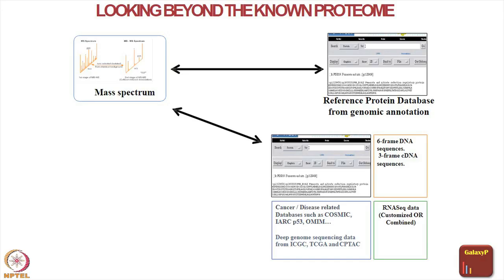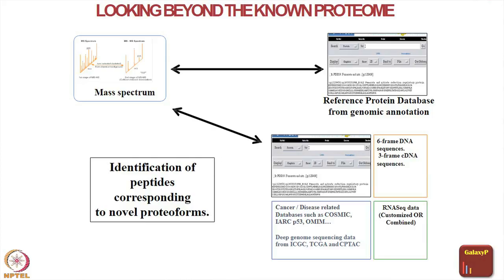If you have a mass spectrum — and generally if you have a reference protein database — you end up identifying proteins which are annotated or known. However, you can actually expand your number of identifications by searching against what was earlier used as a six-frame DNA sequence or even a three-frame cDNA sequence. Nowadays with the amount of RNA-seq data available, and the ability to generate both RNA-seq data and mass spectrometry data for the same sample, one can use RNA-seq data. Researchers have also used repositories like COSMIC which help you get data from somebody else's research — a protein FASTA file or RNA-seq data from representative clinical samples — to search against your mass spectrometry data. This all leads to identification of peptides corresponding to novel proteoforms, which is what proteogenomics is all about.